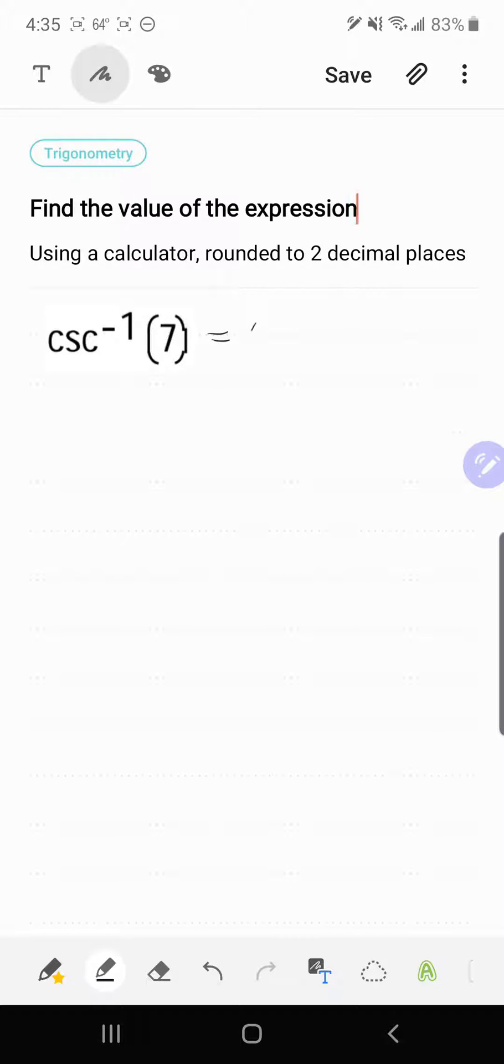Recall that an inverse trig function equals some angle theta. And if I move the inverse cosecant to the other side, that's going to turn it into regular cosecant theta equals 7.